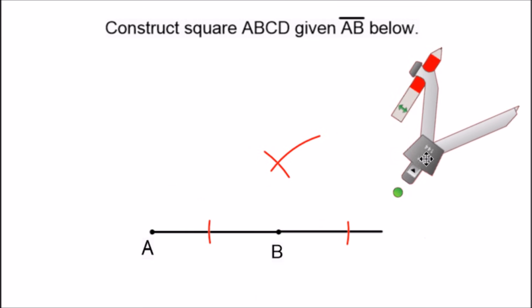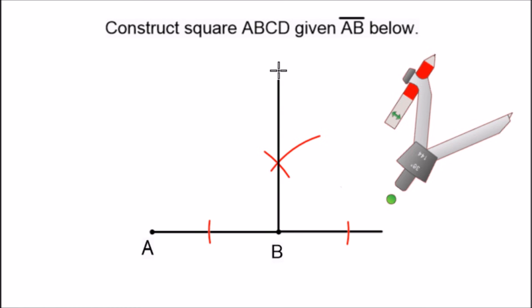Now when we connect point B to this intersection of arcs here, we're going to have a line that's perpendicular to the original line segment.